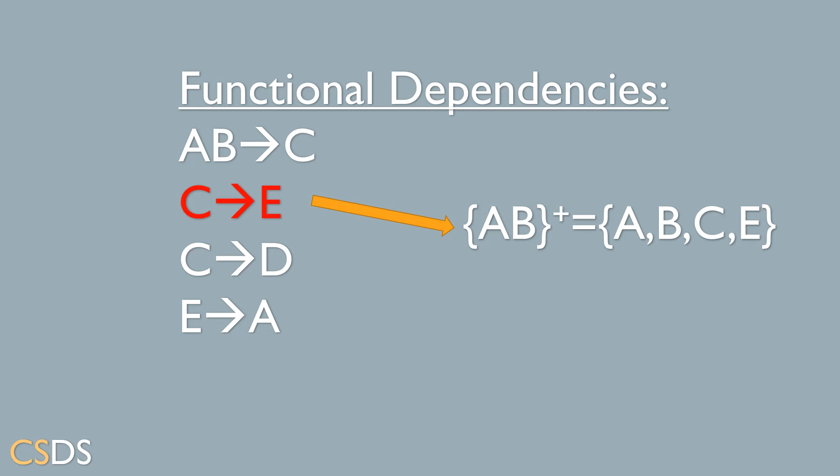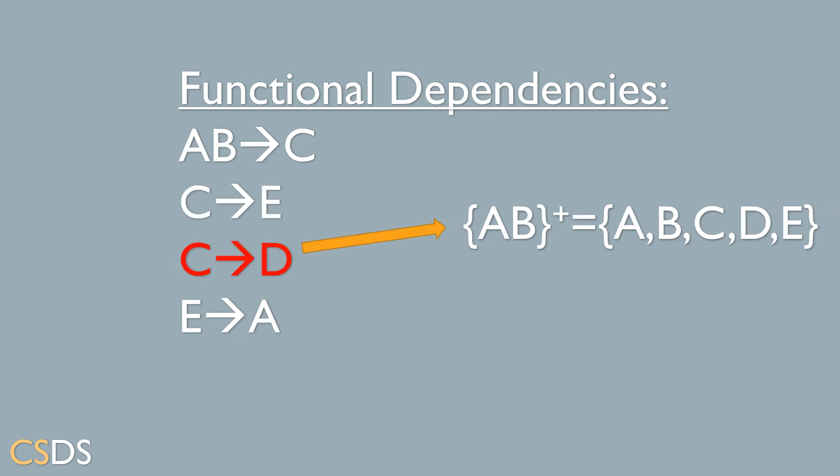Now we see the functional dependency C goes to E, so we will add the attribute E to the closure of AB. From the next functional dependency C goes to D, we can determine D from C. So we add the attribute D to the closure of AB.